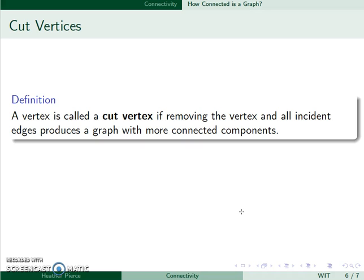We call a vertex a cut vertex if removing that vertex and all of its incident edges produces a graph with more connected components.